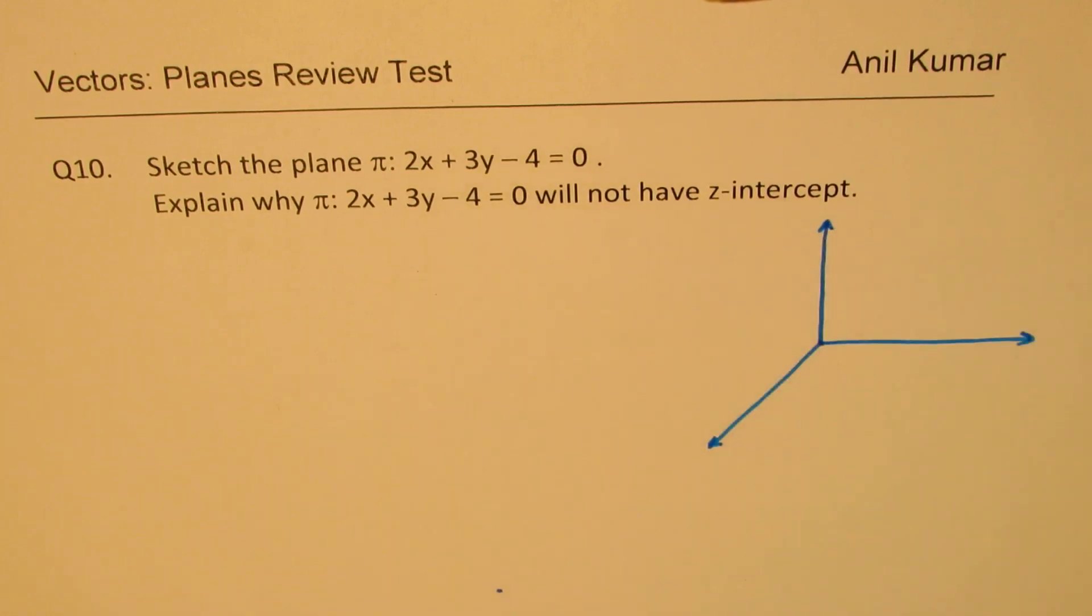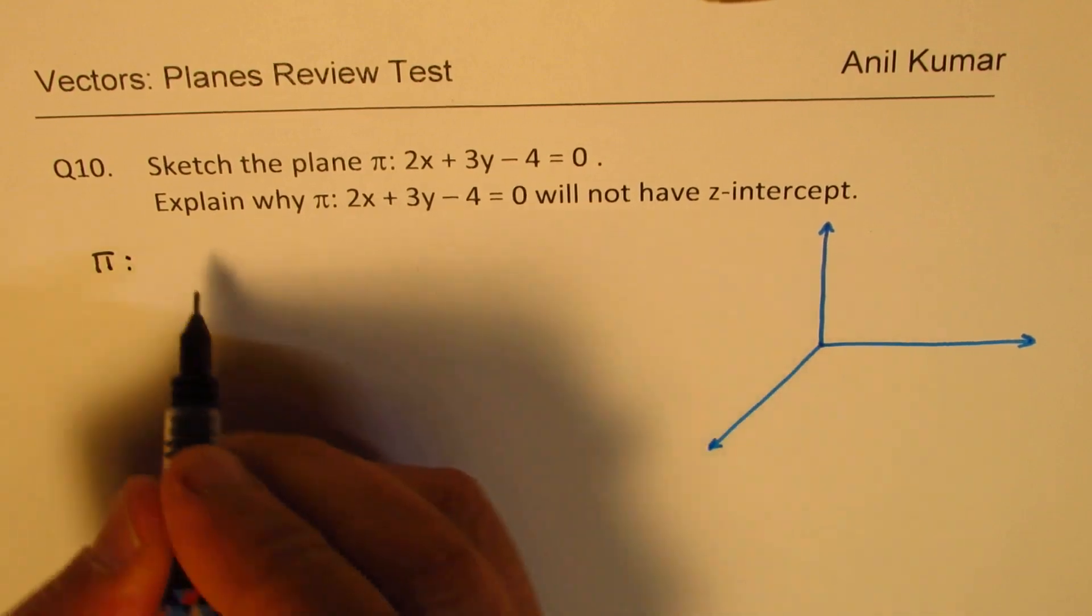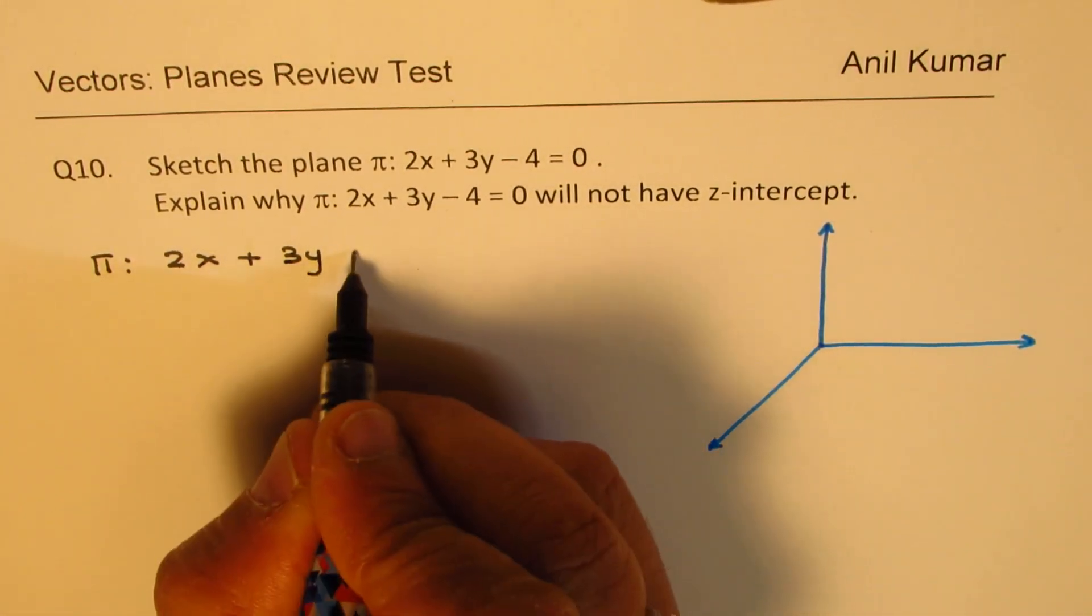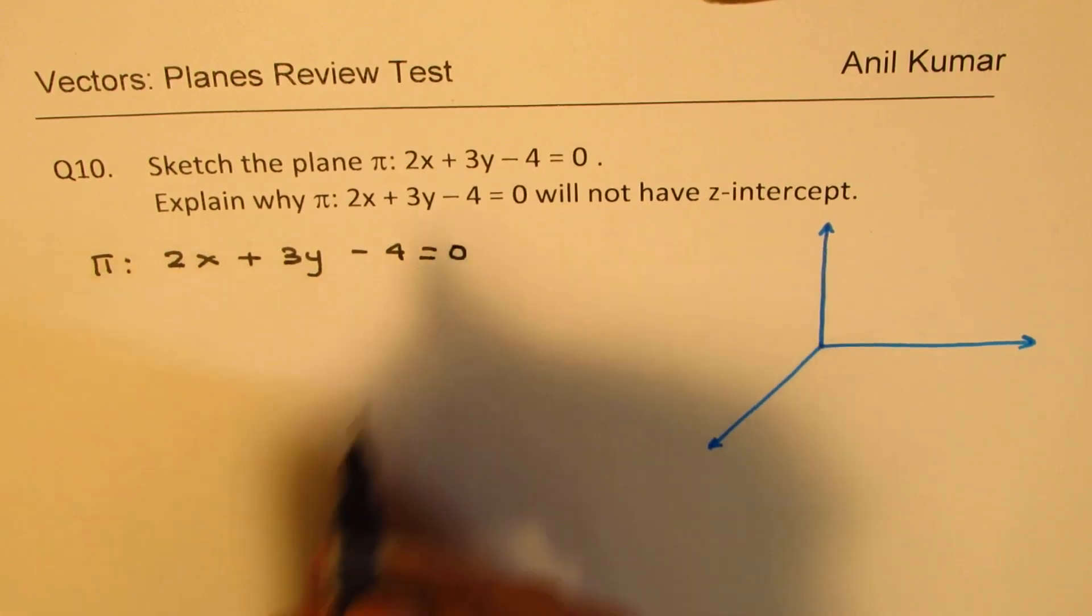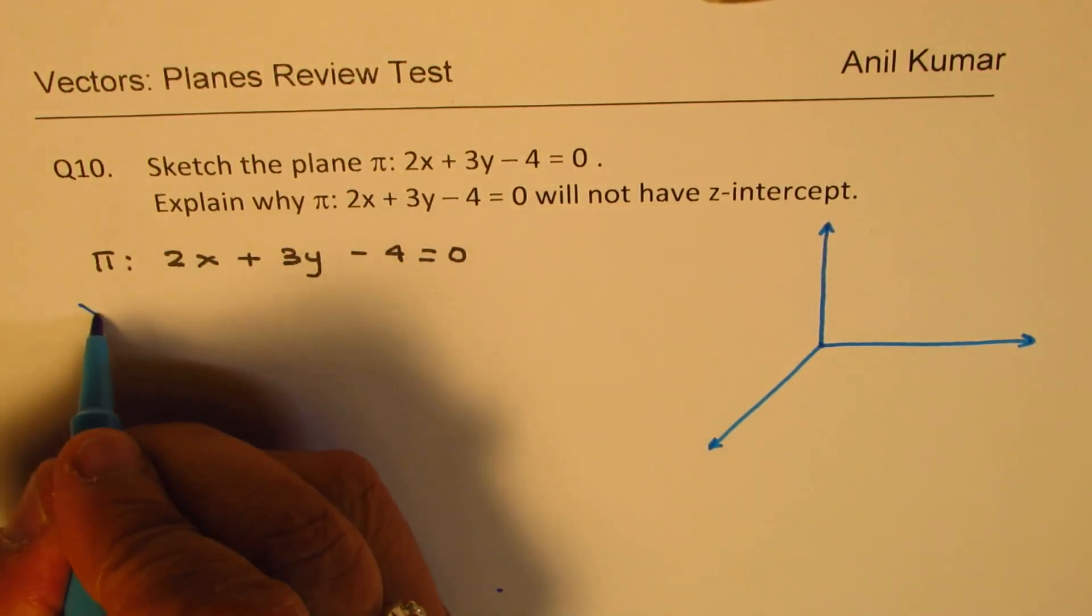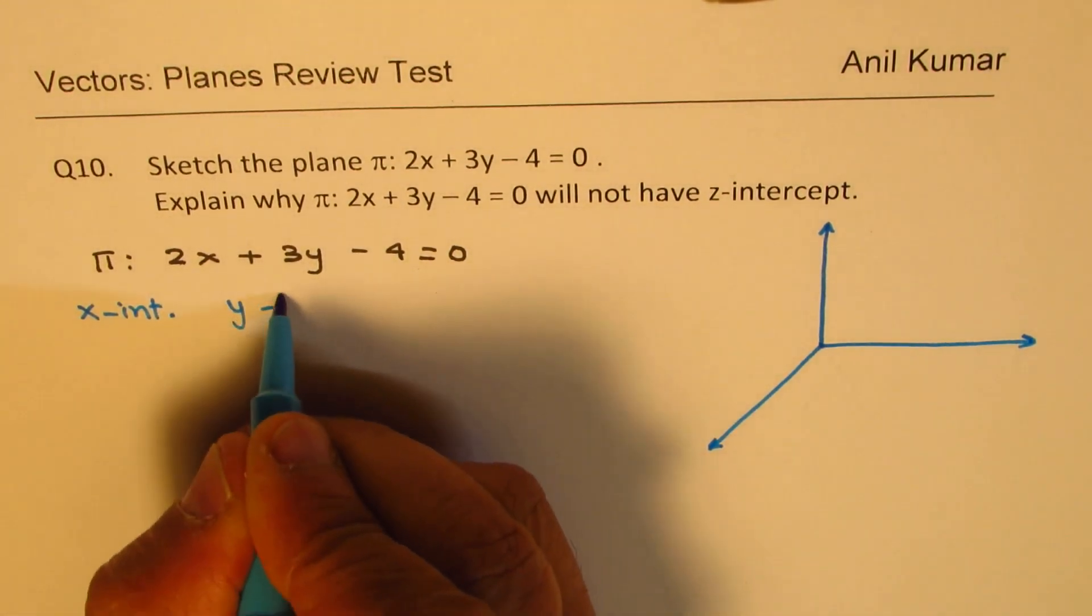To sketch a plane in the given equation form, which is for us 2x + 3y - 4 = 0, it is best to find the intercepts. So we'll actually find x-intercept and y-intercept.